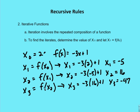For x sub 3, I place x sub 2 into the function f of x. So f of x sub 2 is equal to negative 3 times 16 plus 1. x sub 3 is equal to negative 47. And you repeat this process so on and so forth until you find the desired x sub value. Thank you.